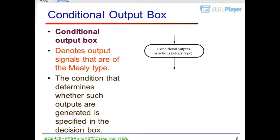Conditional Output Box: Denotes output signals that are Mealy Type. The condition that determines whether such outputs are generated is specified in the Decision Box.